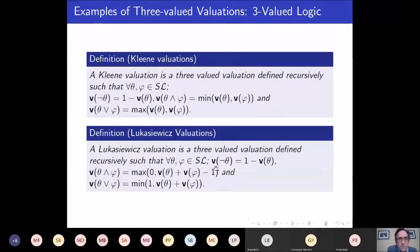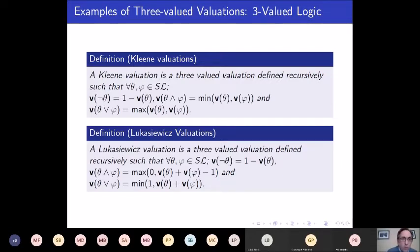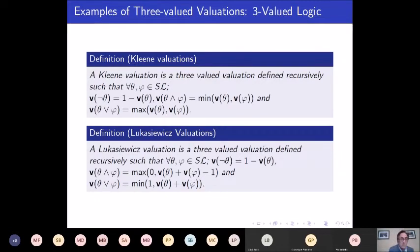Clean valuations are three-valued valuations defined according to standard three-value rules — essentially taking the Tarski rules and generalising them to all truth values. Lukasiewicz valuations are another example: V(not θ) = 1 − V(θ), conjunction is max(0, V(θ) + V(φ) − 1), and disjunction is min(1, V(θ) + V(φ)). Clean and super valuations are the two I'll focus on most.